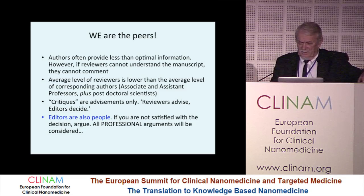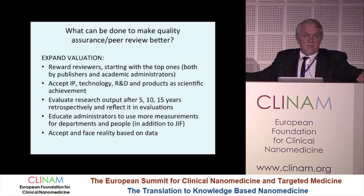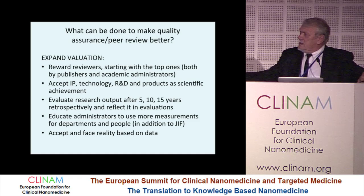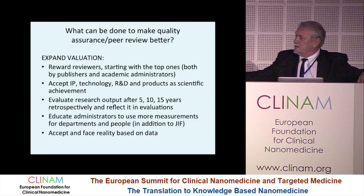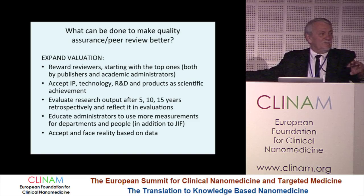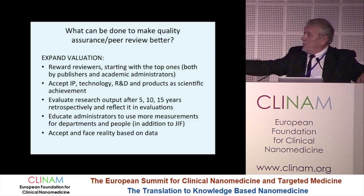I suggest we need to expand valuation. We need to value researchers in an academic field. We should reward reviewers, especially the top ones who are reviewing 20 to 25 papers a year. We should accept IP, technology, R&D, and their products as scientific achievement. Why not value the practical use of research output after certain years? And most importantly, we should educate administrators to use a wider range of measurements for departments and people. Every metric is just an output of the calculation and the way it was made — nothing more. The journal impact factor was created for journals, not for people publishing in them.